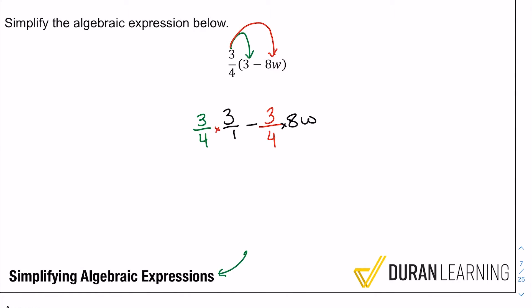And we can actually go ahead and multiply to get three times three is nine over four.